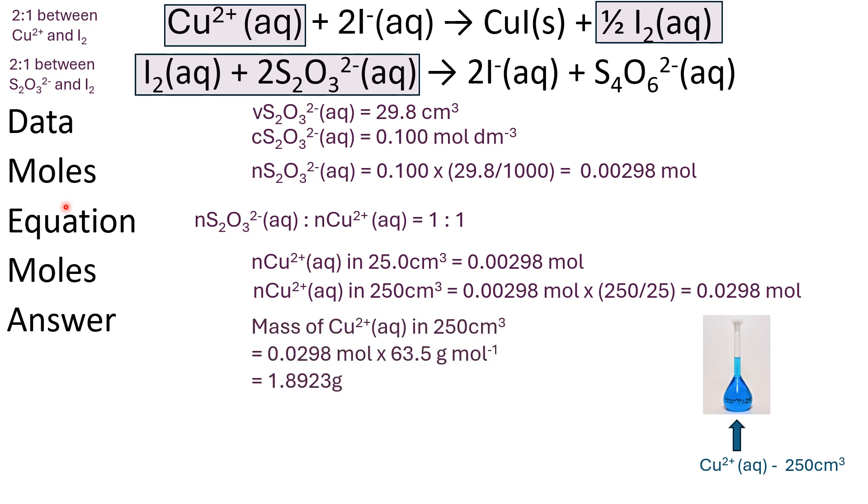Now we want the mass of copper 2+ in that 250 cm³. You multiply the moles we just worked out times the molar mass of copper, which is 63.5 g mol⁻¹, and that gives us 1.8923 g.